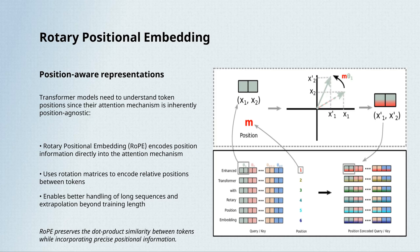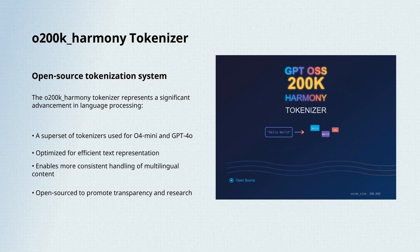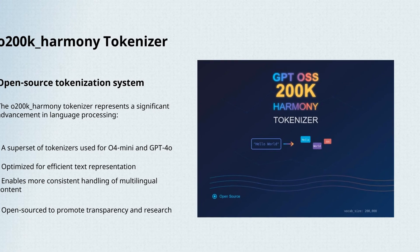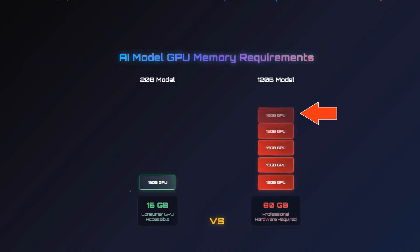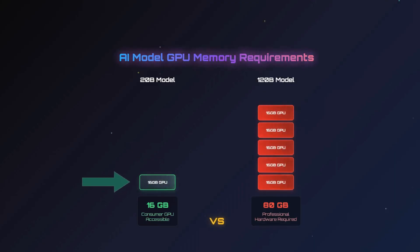They're using rotary positional embedding for positional encoding. They're also open-sourcing their tokenizer called O200K Harmony, which is a superset of what they use for O4 Mini and GPT-4-0. The 120B model requires about 80GB of GPU memory, so you're going to need some serious hardware. But the 20B model only needs 16GB of memory, which means it can run on a lot of consumer GPUs.